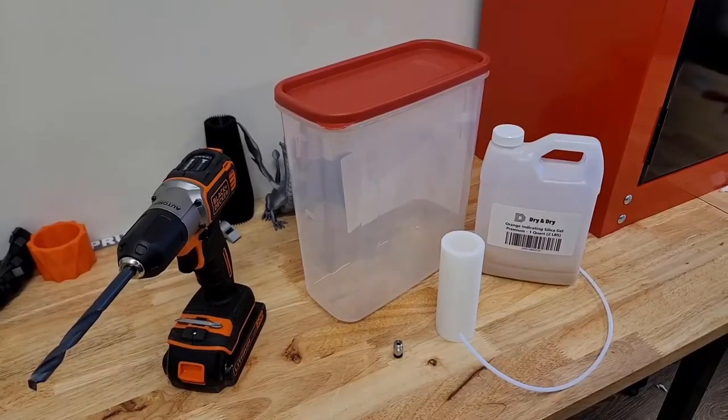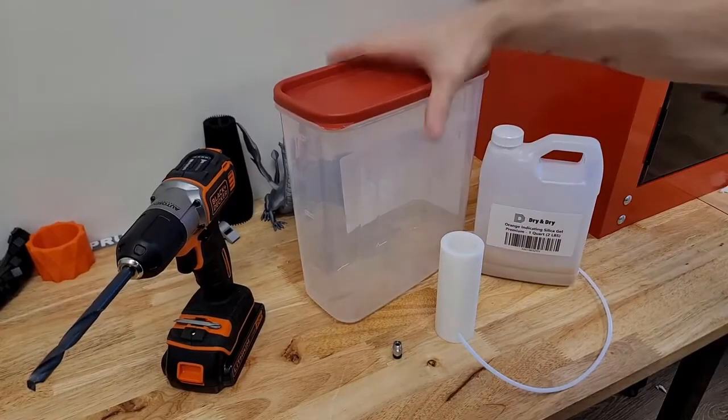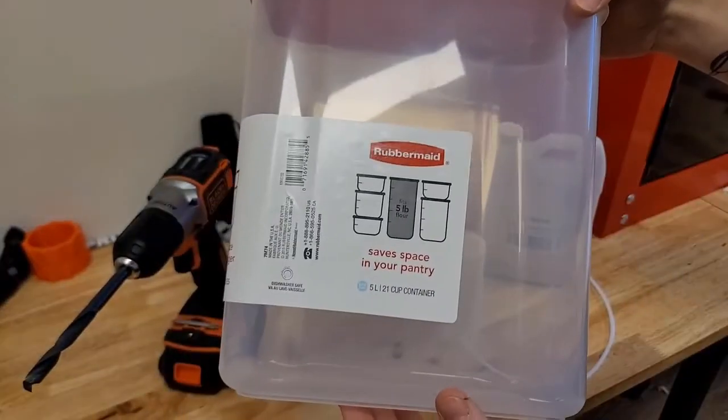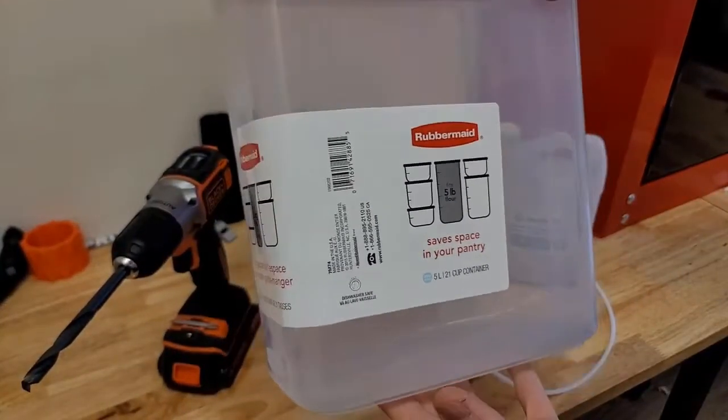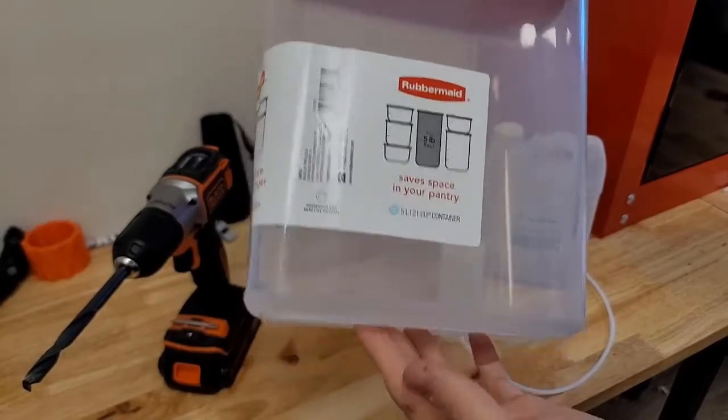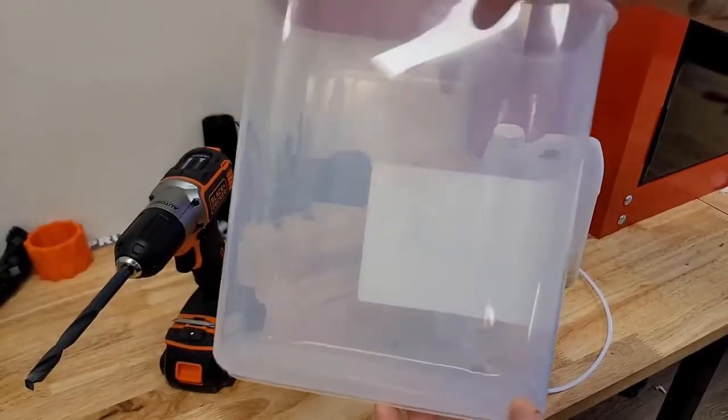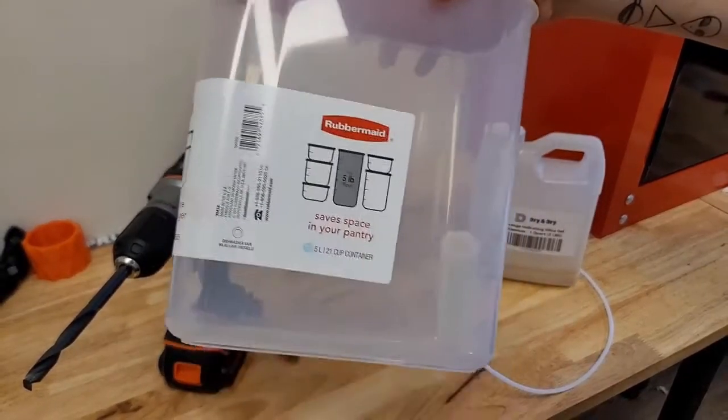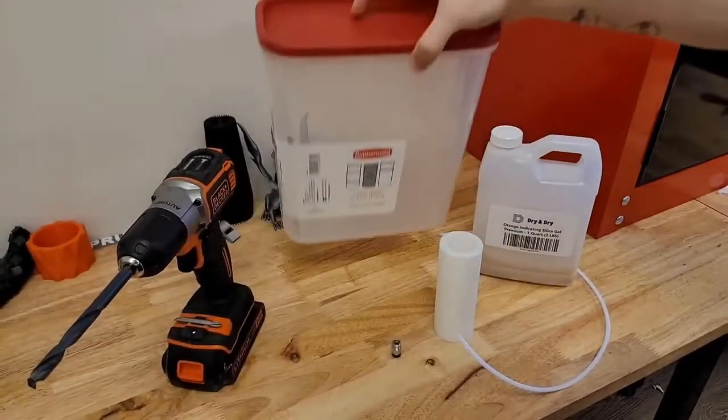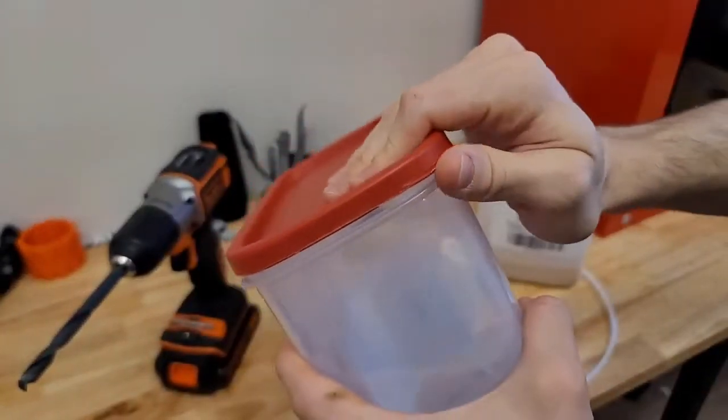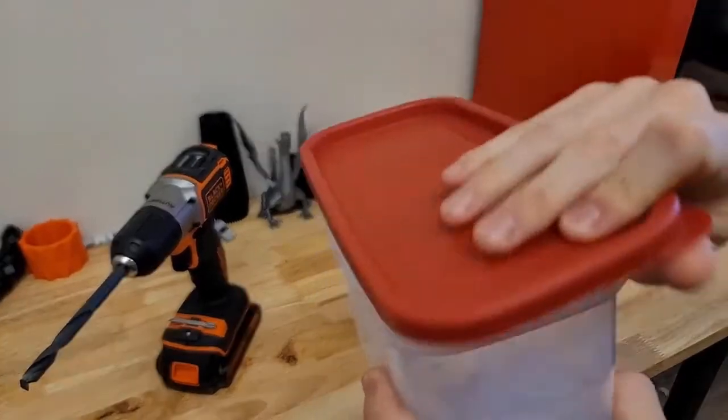Today I'm going to show you how to make a filament dry box. What you're going to need first is something similar to this here. It's like a 5-pound flour container from Rubbermaid. You can really use any plastic container with a lid on it. Just find a cheap one. You don't really need an expensive one.